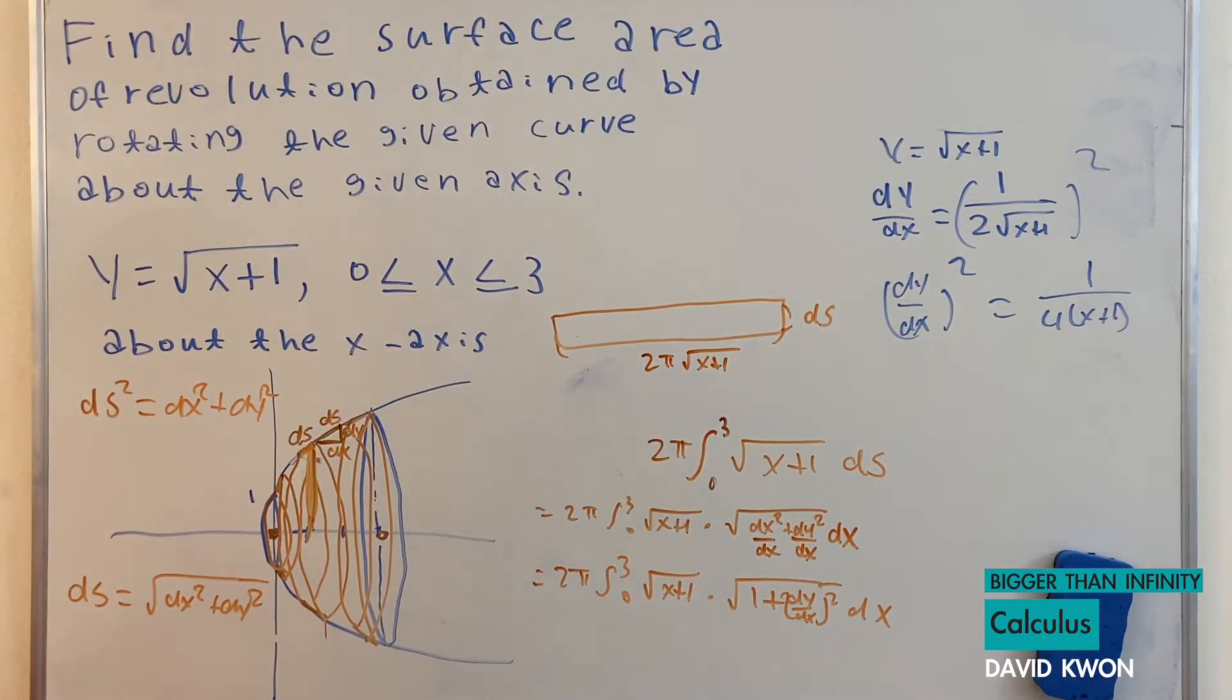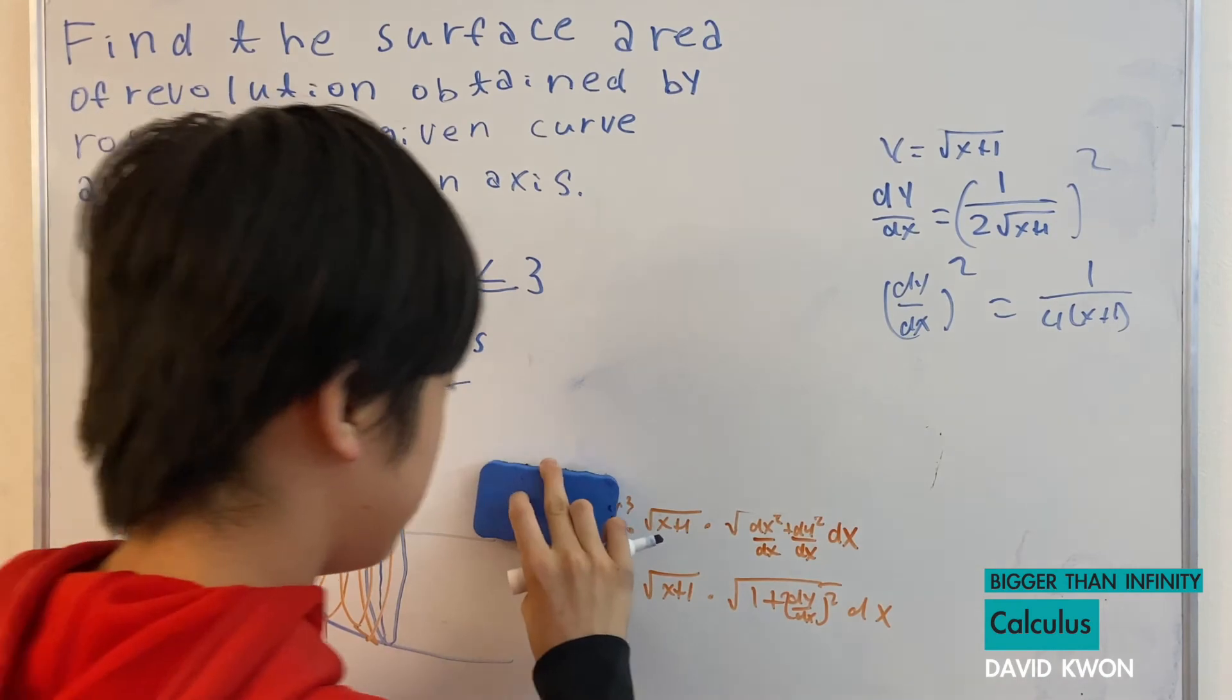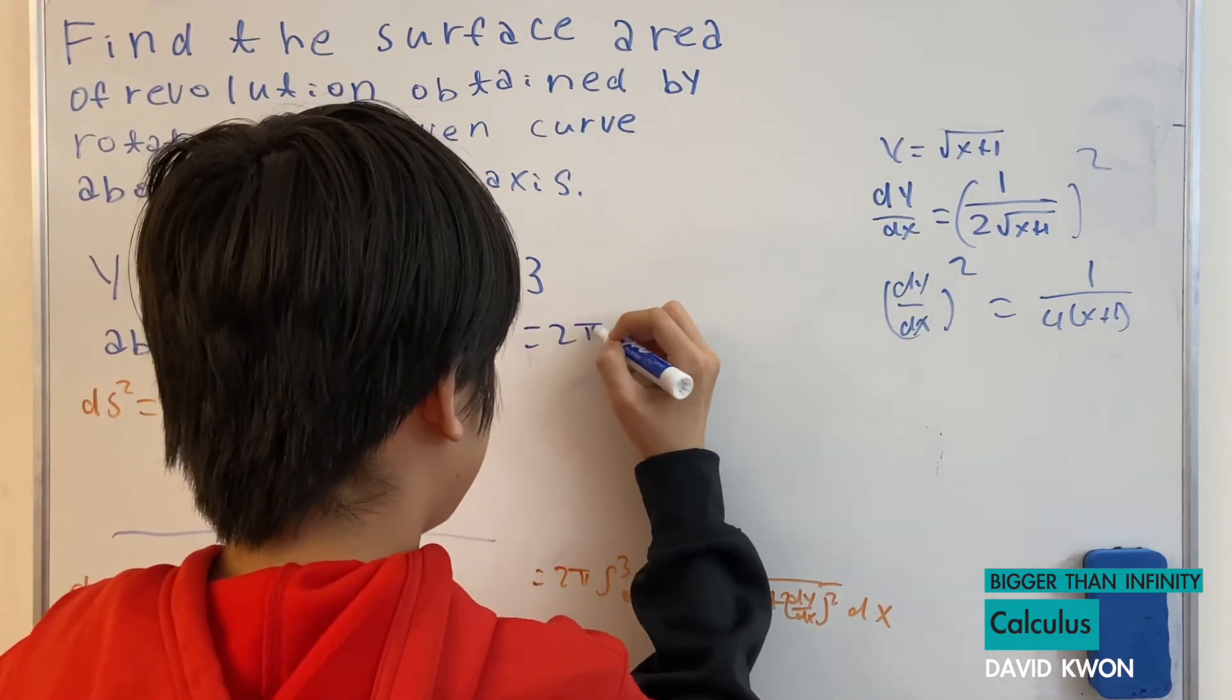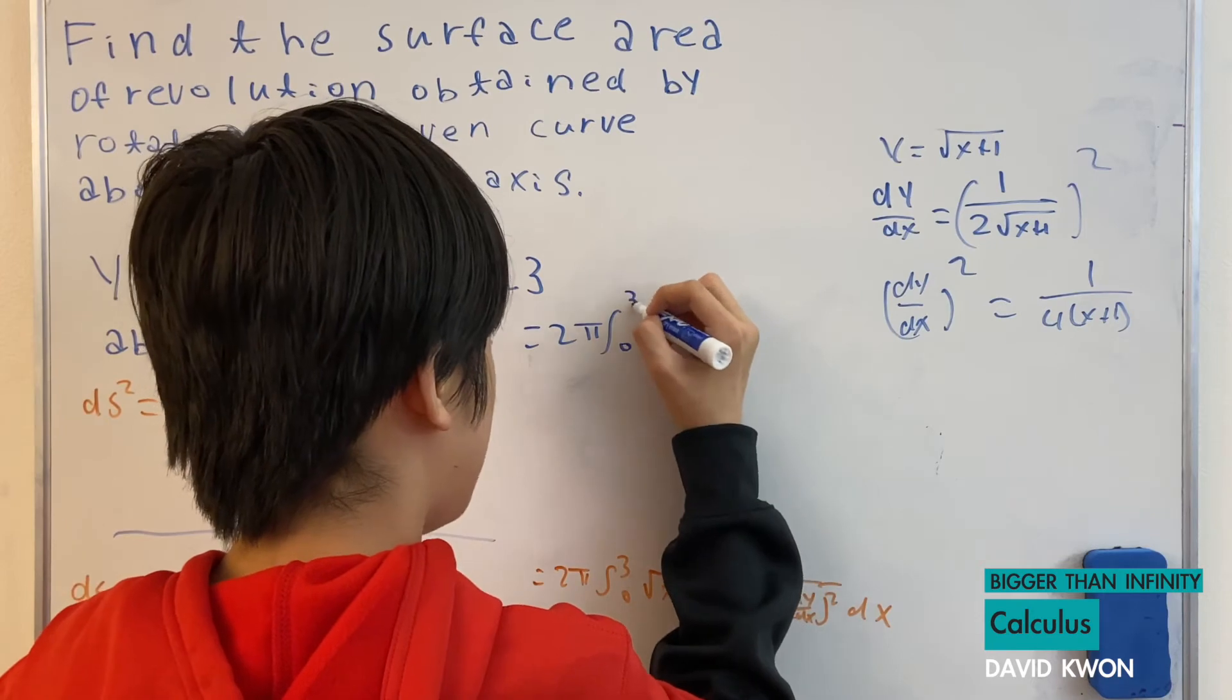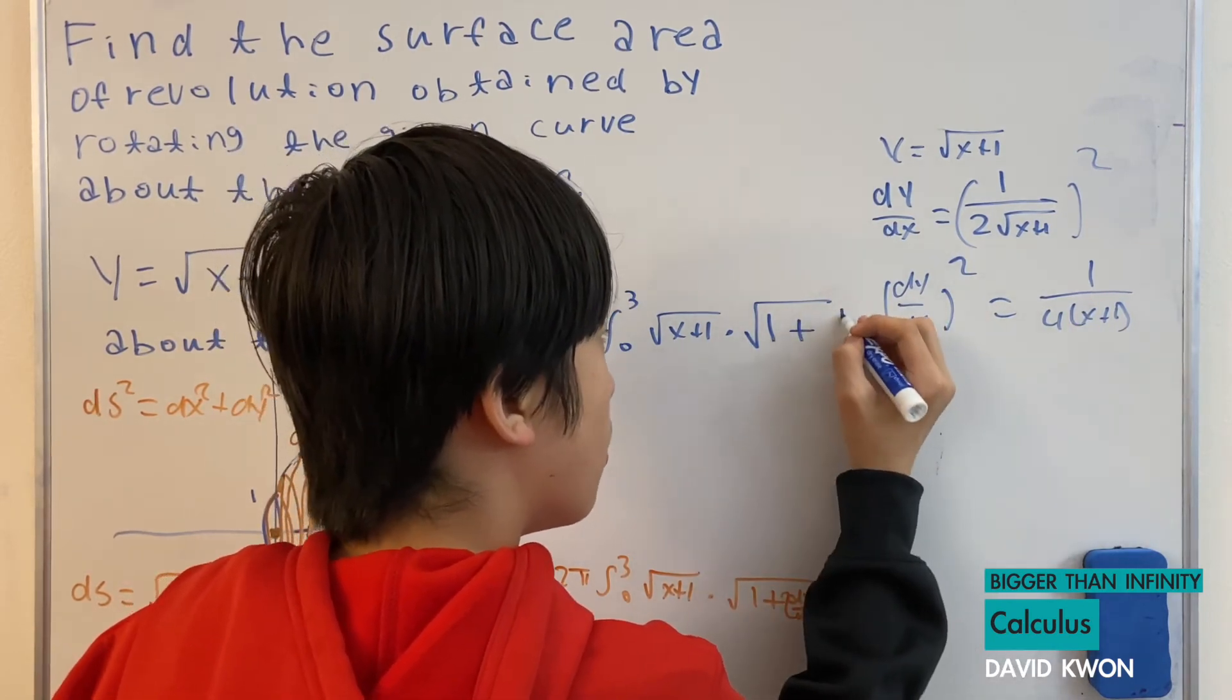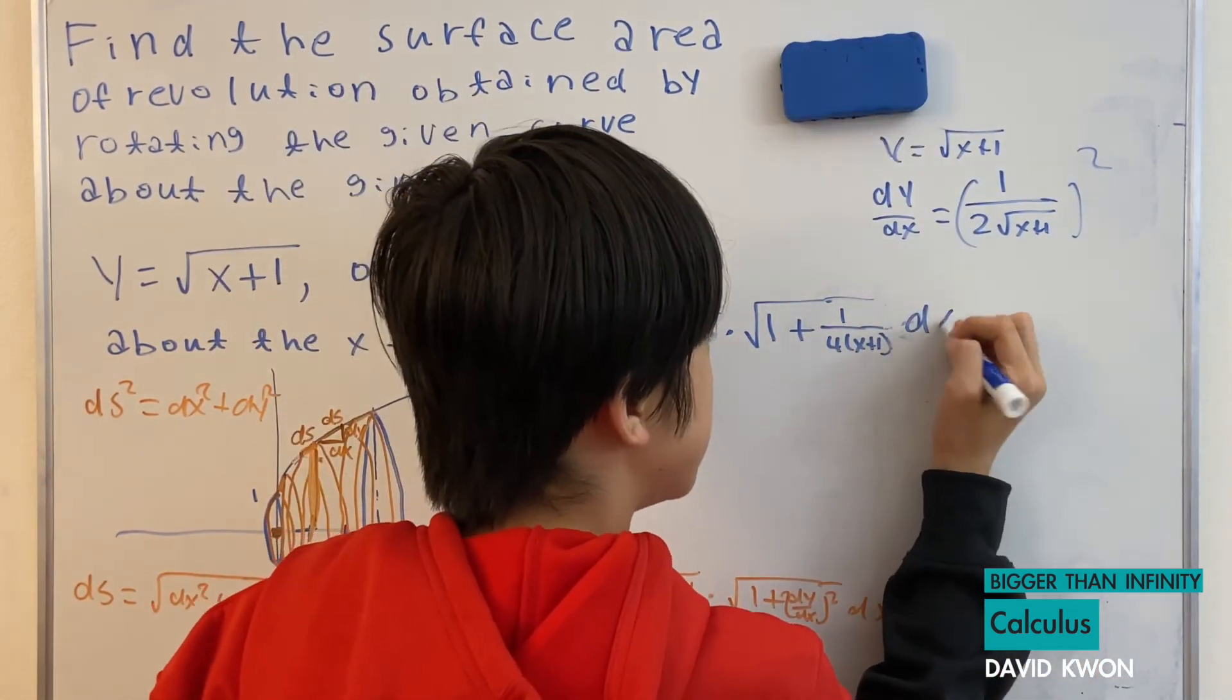Looks like we are running out of room. So let's erase something. This one, this one, this one. So we got down to here, and now let's substitute this into here. If I do, I get 2 pi times the integral interval of 0 to 3 of square root of x plus 1 times square root of 1 plus 1 over 4 times x plus 1. And then I have the times dx.